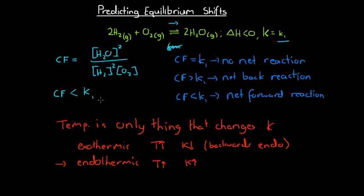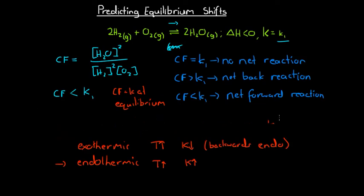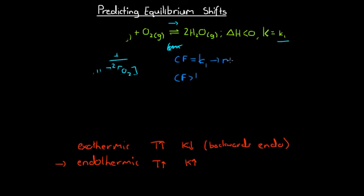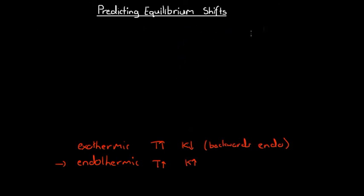The equilibrium constant equals the concentration fraction at equilibrium — that's how temperature affects K values. Now we're going to look at an example calculation using the comparison between the concentration fraction and the equilibrium constant to figure out what's going on in a given system. The example is the decomposition of N₂O₄ into nitrogen dioxide, NO₂.